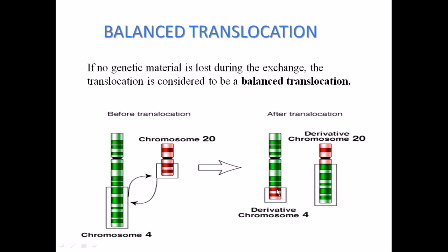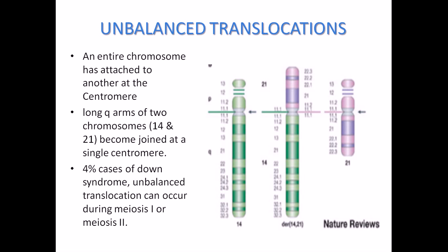...chromosome 4 receives a very small part from chromosome 20, while chromosome 20 receives a longer part from chromosome 4, ultimately converting both chromosomes to a similar length. This is called balanced translocation. In unbalanced translocation, the segments transferred do not maintain any length similarity — one chromosome is still longer than the other. These are the different structural chromosomal abnormalities, and I hope that's helpful.